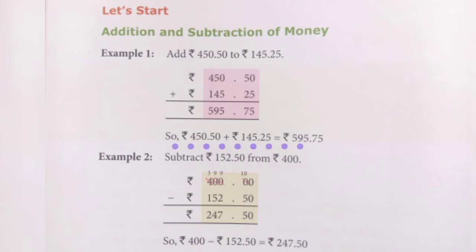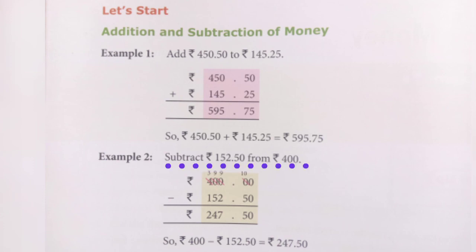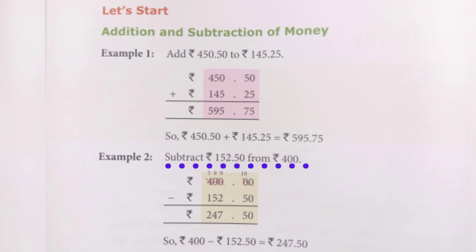Now for subtraction. Example 2: Subtract 152 rupees 50 paisa from 400 rupees. First write them in columns. Since 400 has no paisa, we write double zero (00) in the paisa column. Now subtract paisa from paisa: 0 minus 0 is 0, but 0 minus 5 is not possible, so we need to borrow.